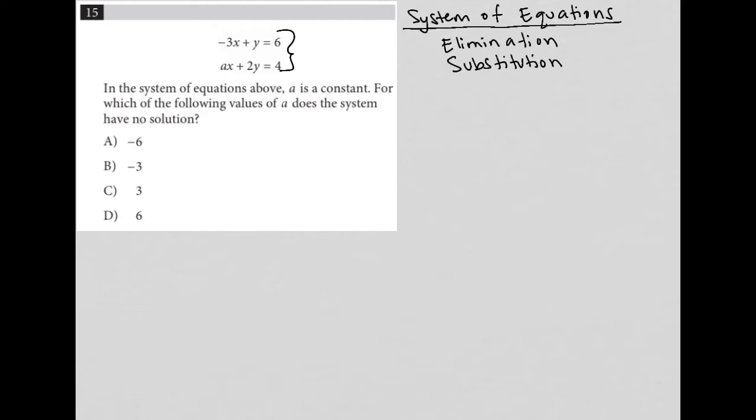So then the question says, in the system of equations above, A is a constant, right? So A is actually a number. For which of the following values of A does the system have no solution? Okay, so here is really the hint that a lot of students miss.